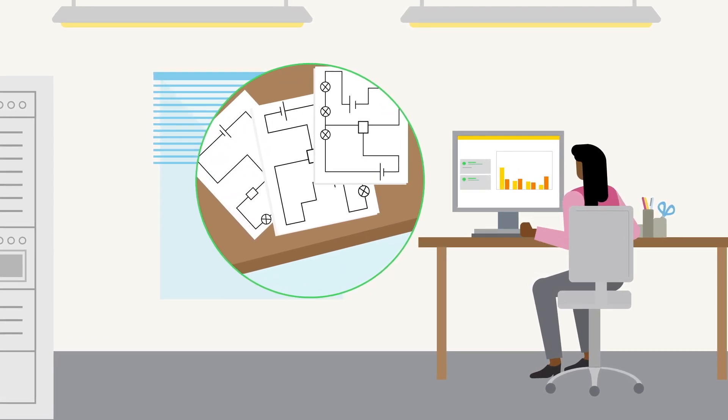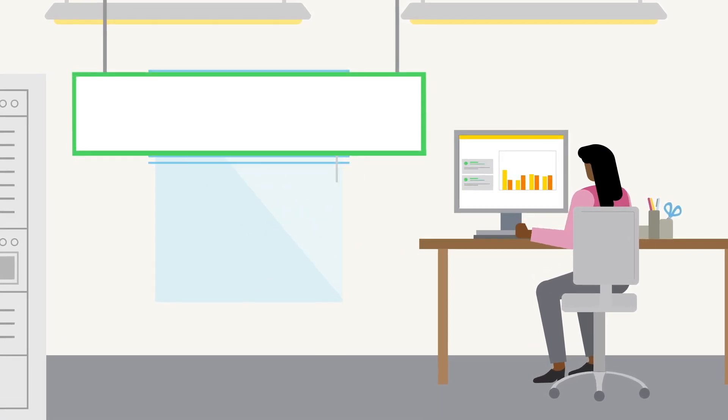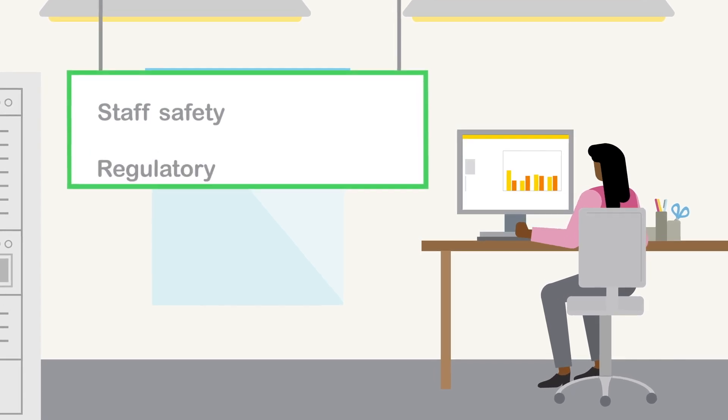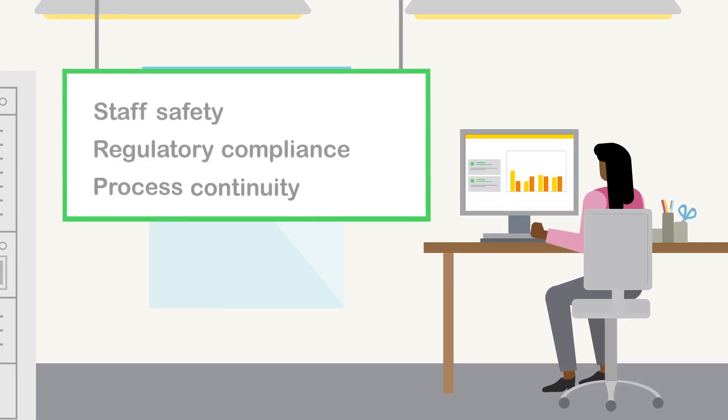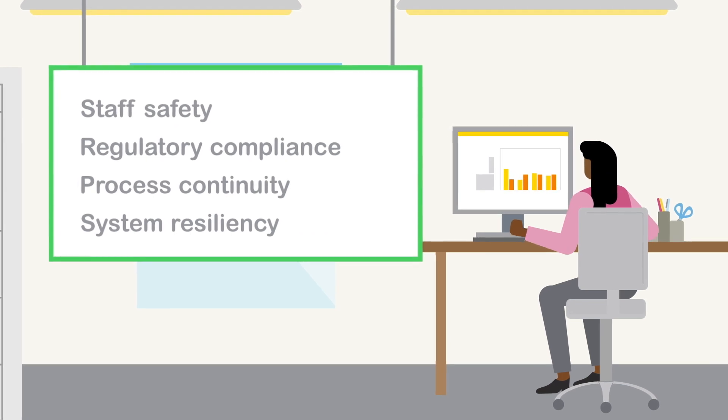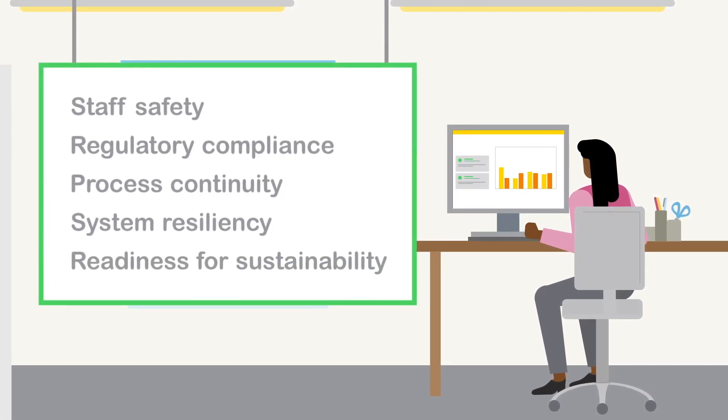Electrical distribution systems are complex setups with critical requirements such as staff safety, regulatory compliance, process continuity, system resilience, and readiness for a sustainability program.